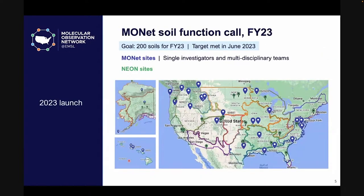This map shows the locations of MONET sampling sites in FY23. We're using a network of long-term research sites operated by partners such as NEON, BER SFAs, LTERs, and agricultural research stations, as well as crowdsourced sites across the U.S. This approach was inspired by the Wonders Open Science Project led by James Stegen at PNNL. We launched the soil function call in February this year and had to close it in mid-June, earlier than anticipated, when applications exceeded our capacity of 200 sampling events. We approved 27 research proposals, translating to more than 400 cores, 600 replicates, and thousands of individual samples and splits.